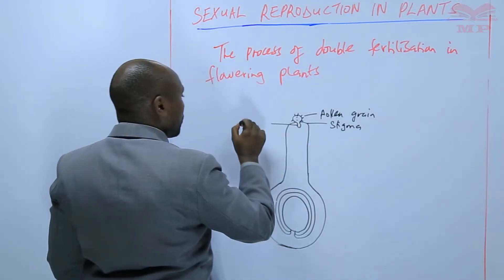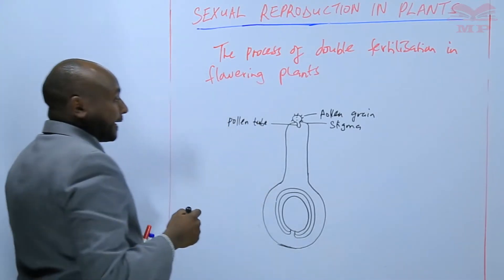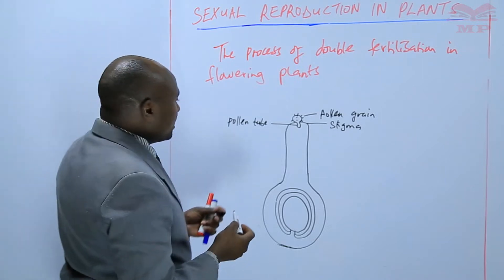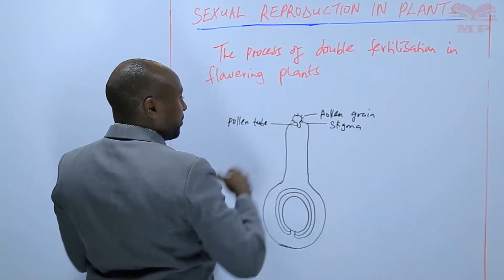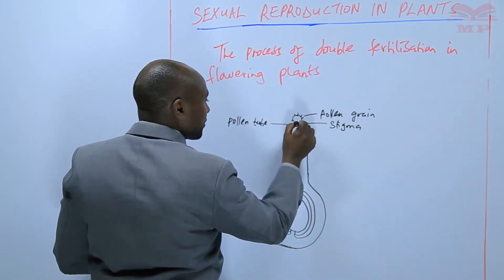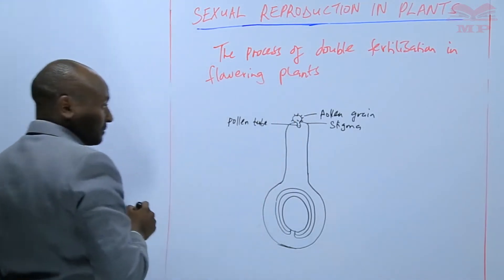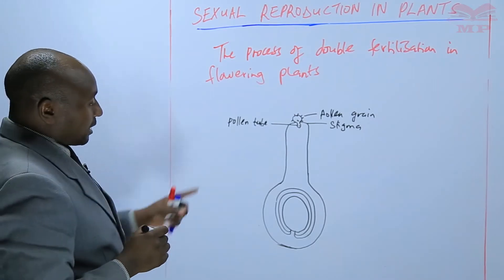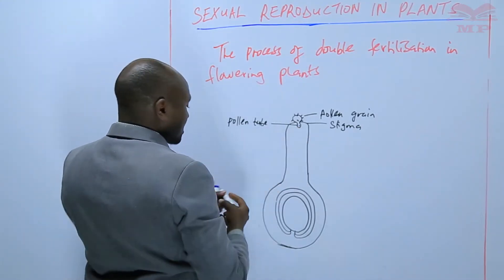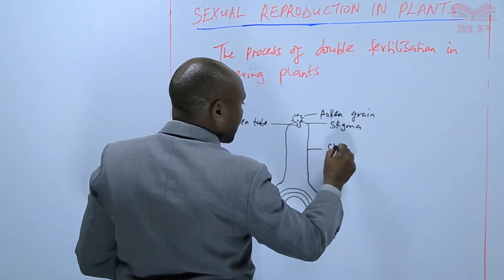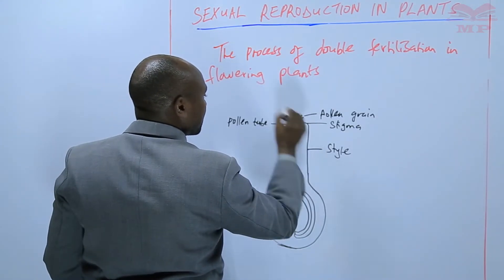This pollen grain, on sticking, absorbs nutrients from the stigma and it germinates something that is called a pollen tube. In this pollen tube, the tube nucleus takes a position at the tip of the pollen tube, while the generative nucleus remains somewhere behind. The pollen tube continues absorbing nutrients from the style and is growing down the style, continuing to lengthen and become longer.